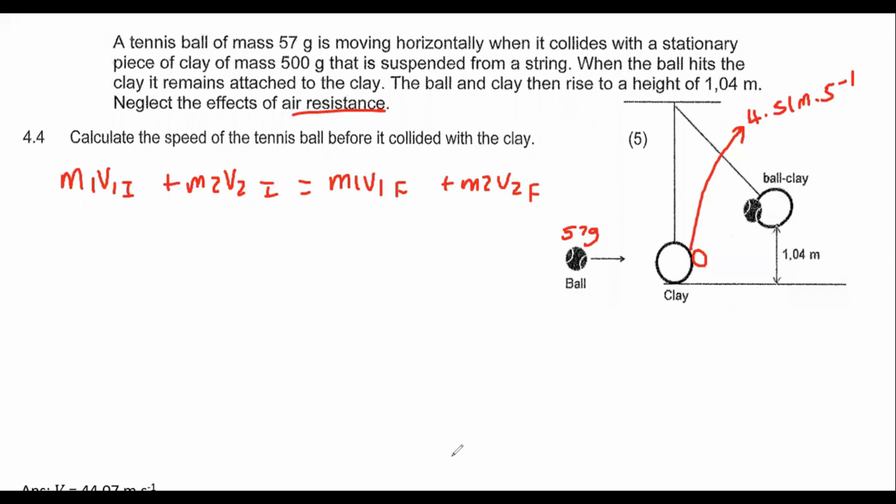M1V1 initial plus M2V2 initial equals M1V1 final plus M2V2 final. We'll choose a direction as positive—let's say to the right is positive. I'm going to use the ball as my mass one. What you must understand is that we are only looking at the question in this little block. This is the initial condition, and the final condition is when the ball and the clay move off. That would be 0.057 multiplied by the initial velocity of the ball, which we don't know, so we can say VI.